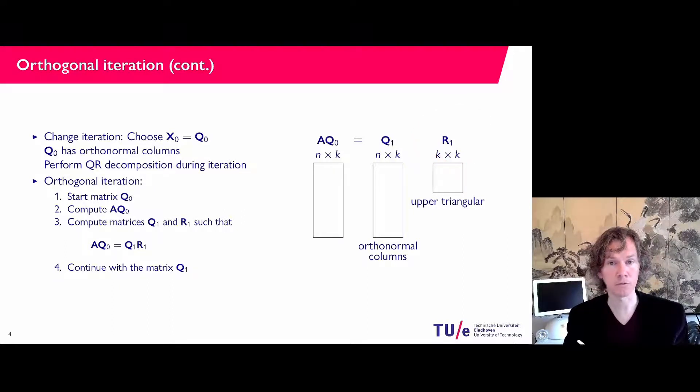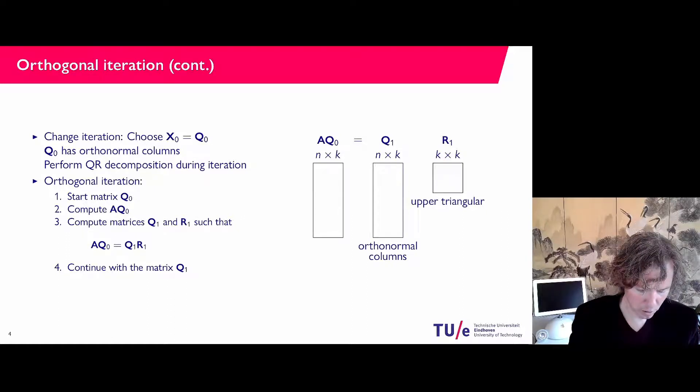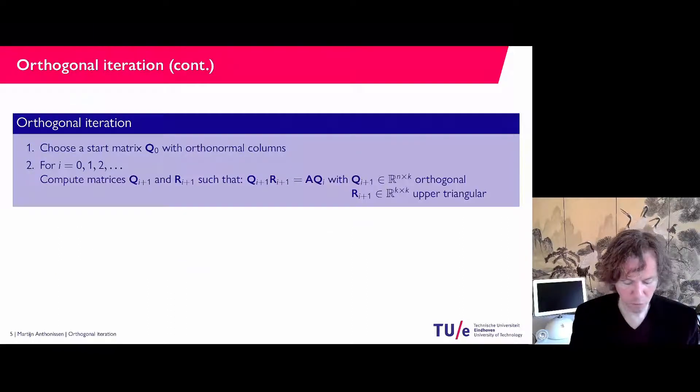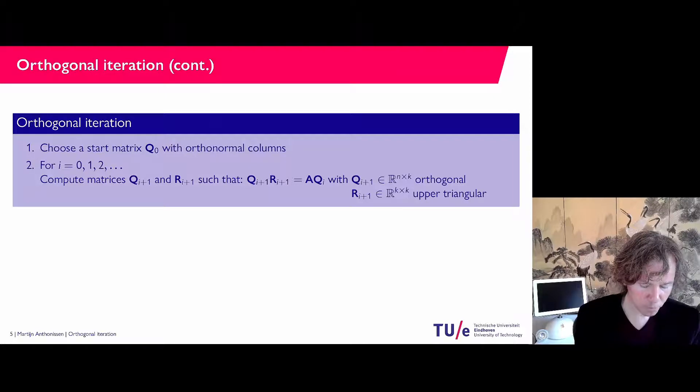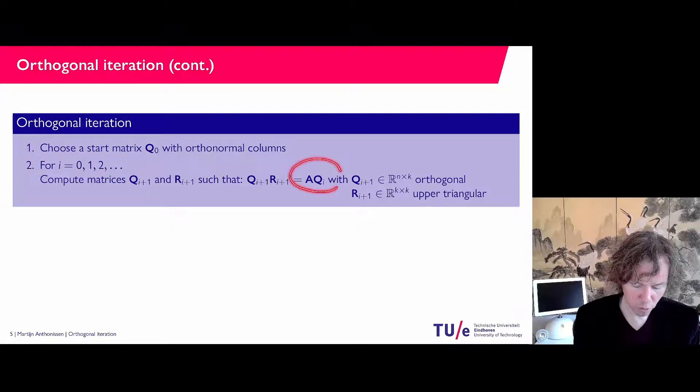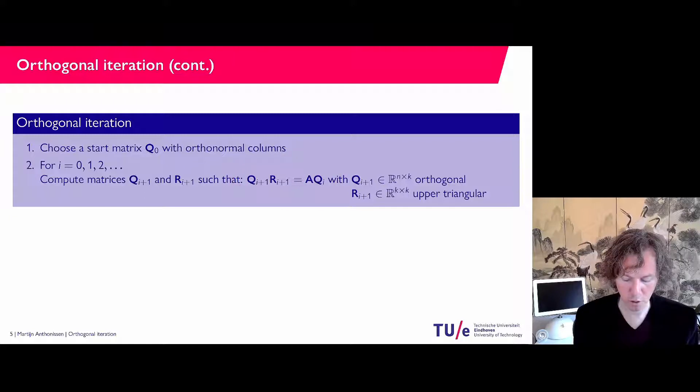So let's see. Here's the formulation. I'm going to choose a start vector with orthonormal columns, so that's why I call it Q. And then I'm going to compute matrices Q_{i+1} and R_{i+1} such that A times Q_i is written as Q_{i+1} times R_{i+1}. So the Q matrices are orthogonal and the R matrices are upper triangular.